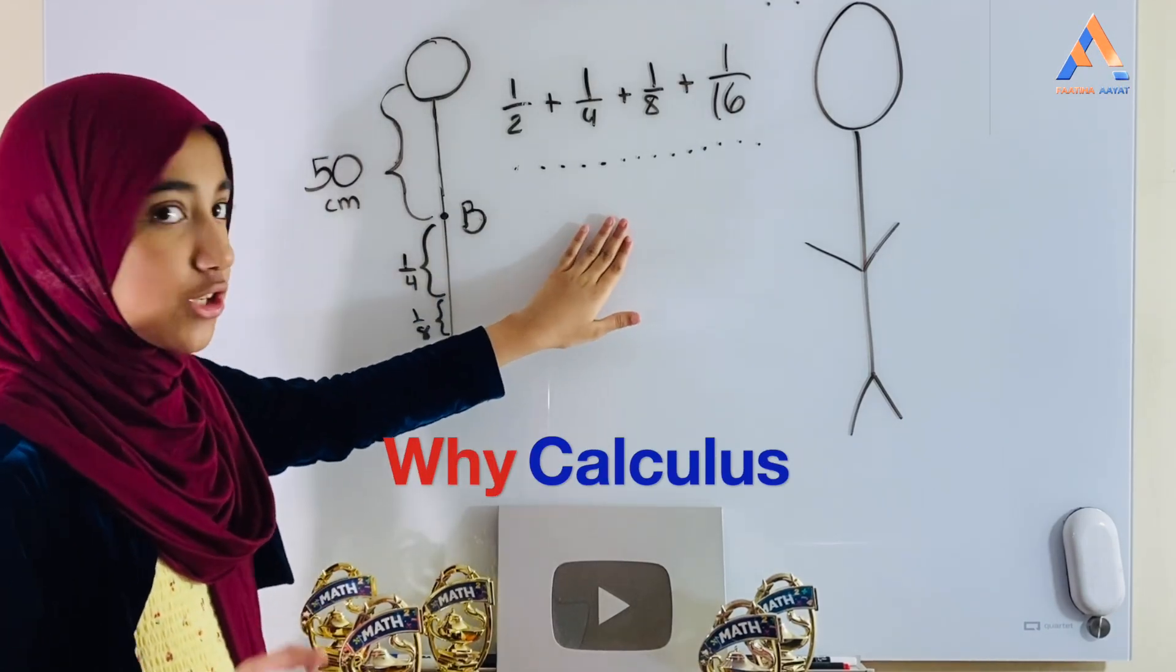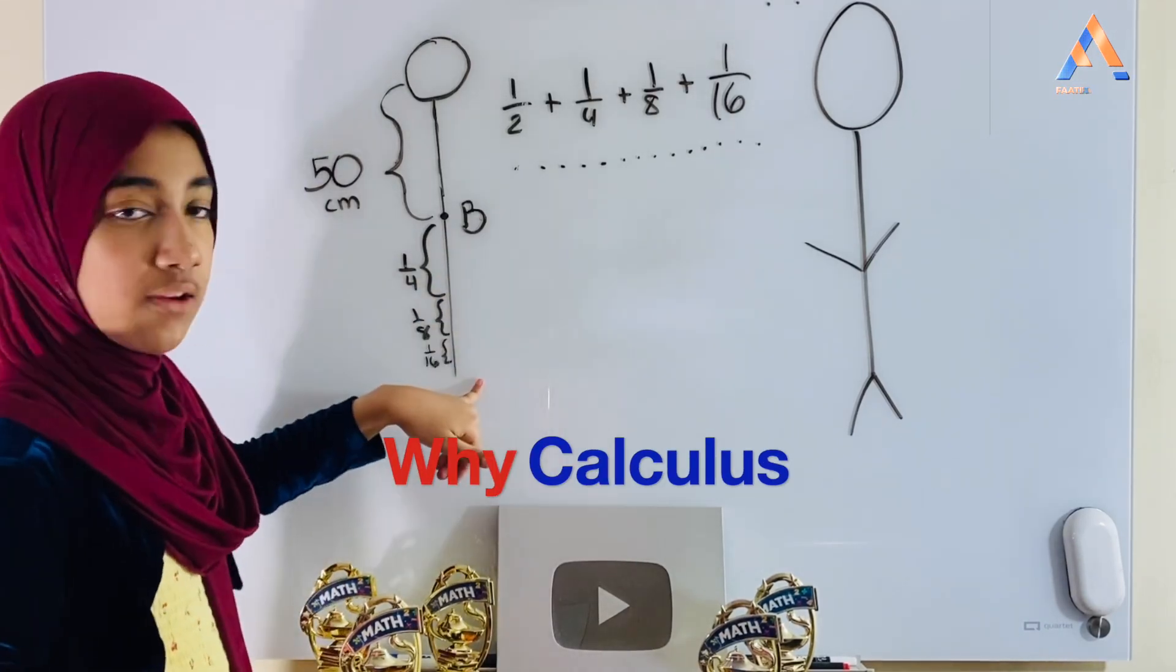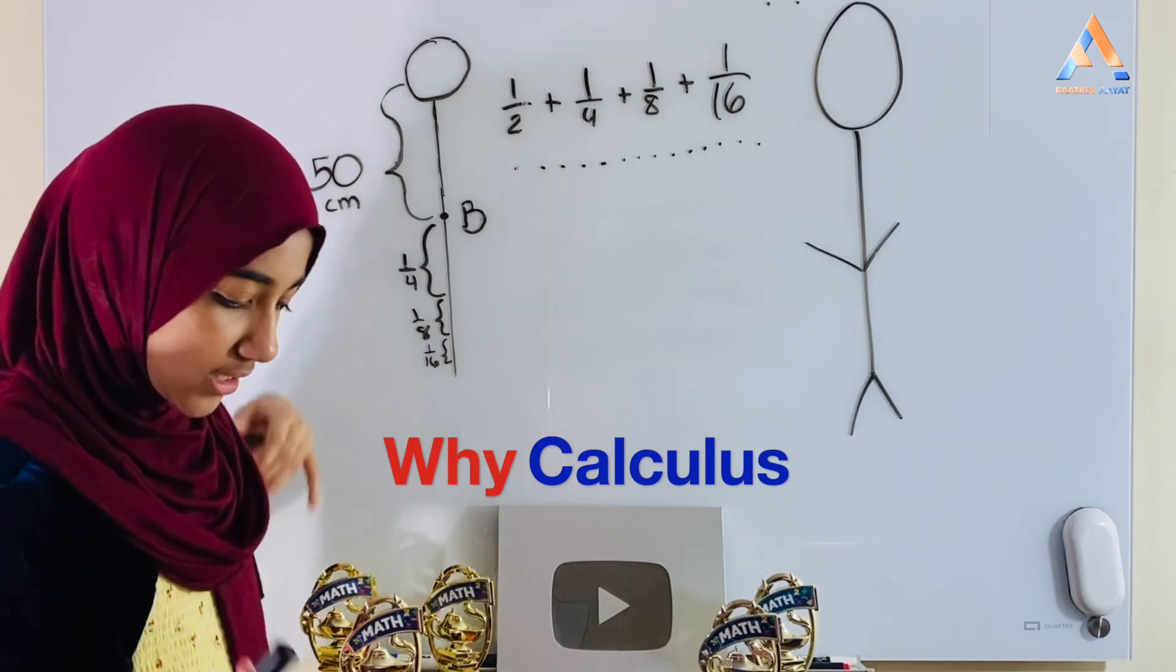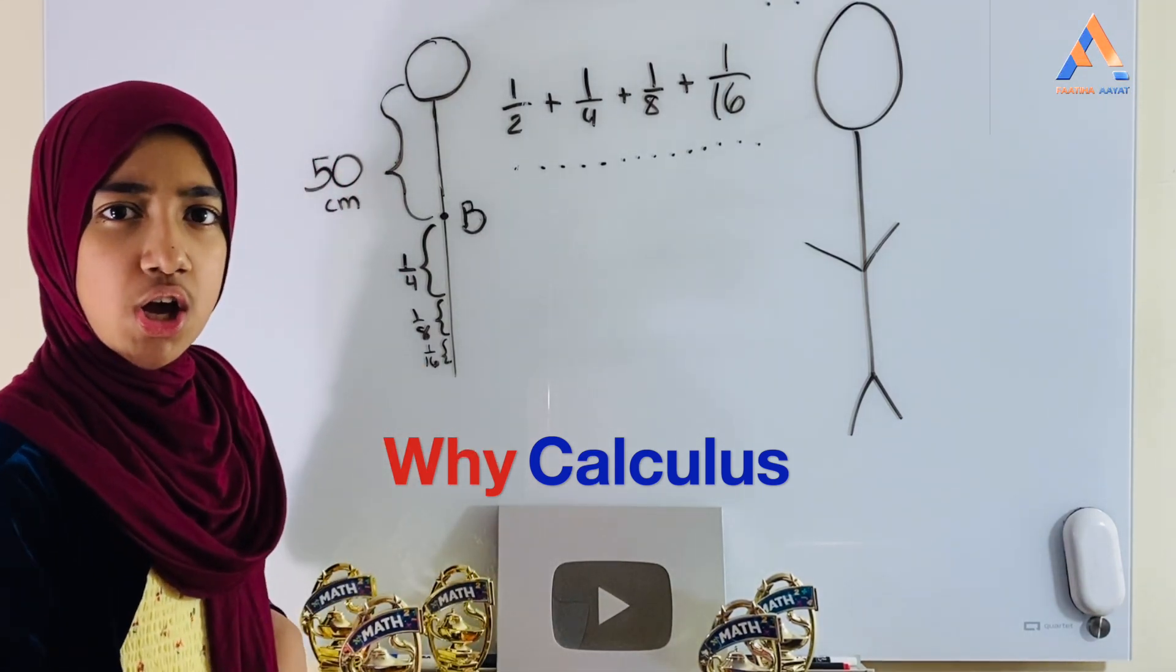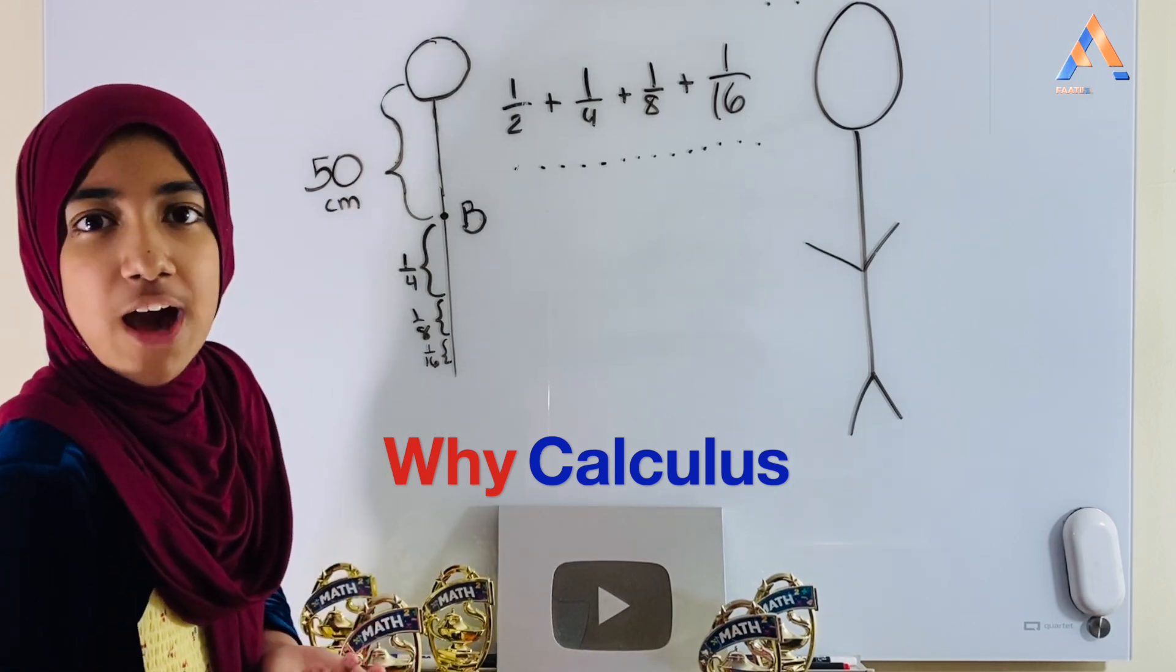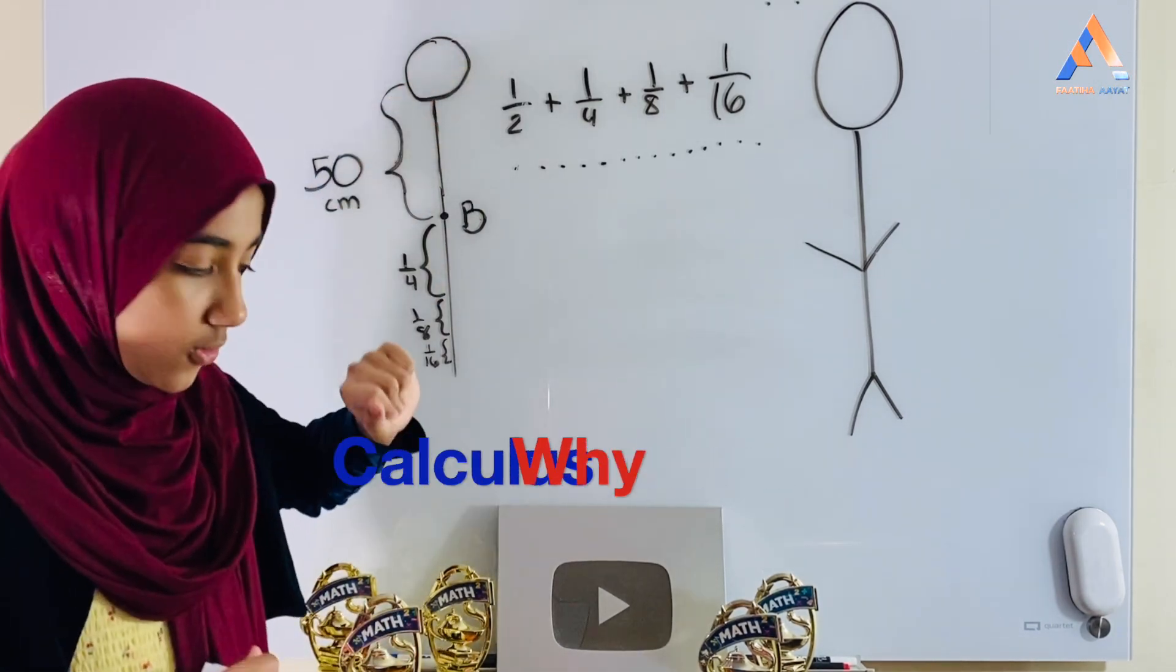Mathematically, as you can see, it should be true that the ball should never touch the ground. But in reality, we see that the ball definitely touches the ground. So then, which one is true and how do we know that? That's why we need calculus.